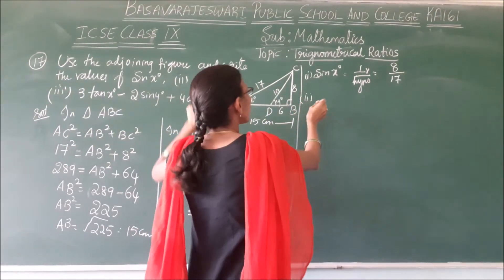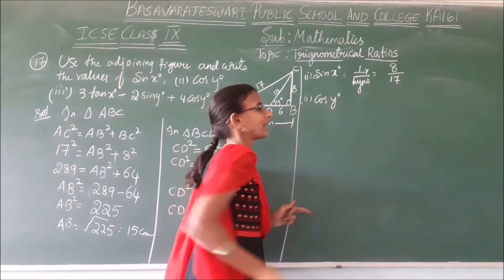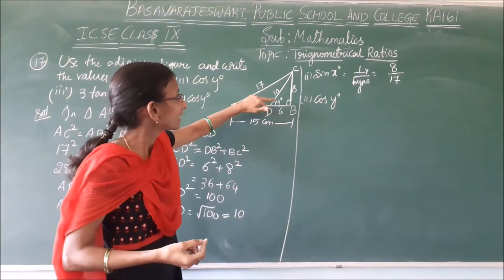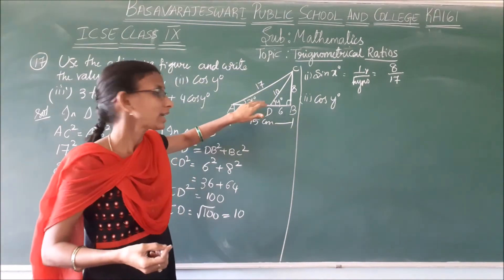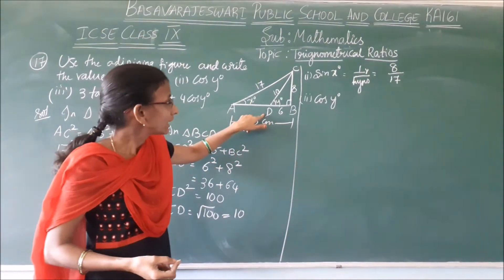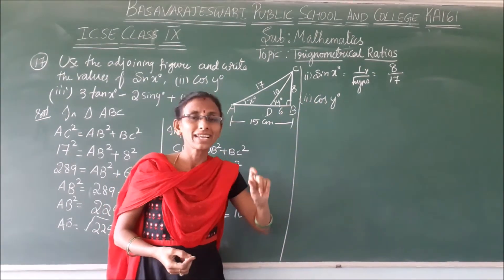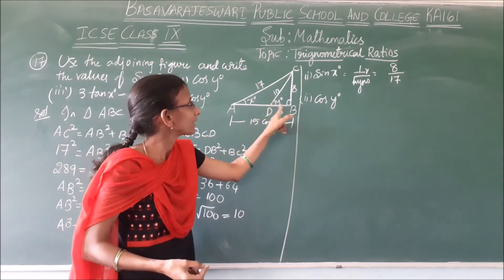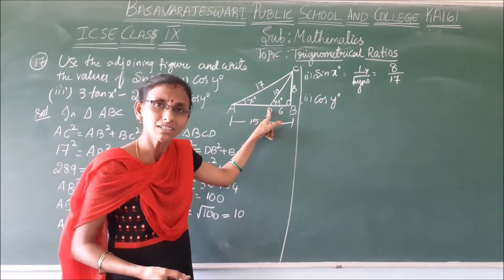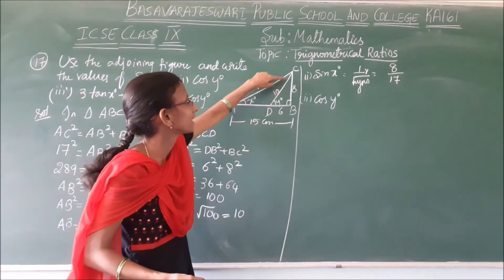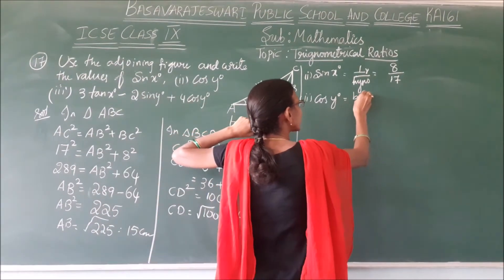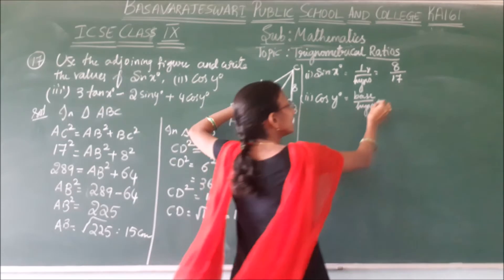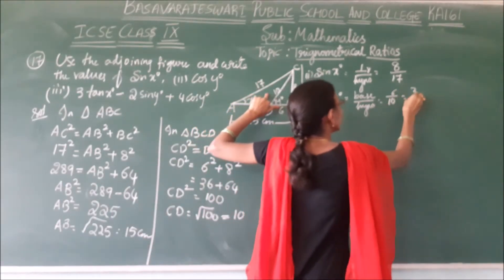Next, second one is cos y. Cos y means base by hypotenuse. This y is in triangle BCD. Here the base is BD and the hypotenuse is CD. So cos y equals base by hypotenuse, which is 6 by 10, and that equals 3 by 5.